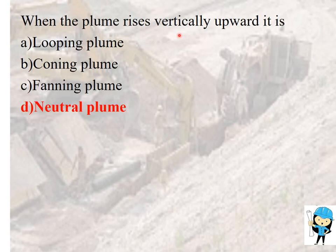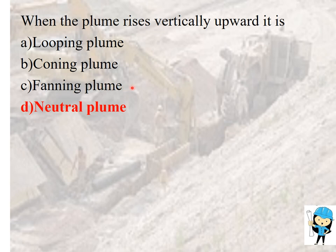When a plume rises vertically upward it is called a neutral plume. The neutral plume occurs when wind velocity is less than 1.5 meters per second. If the same vertically upward rising plume has wind velocity greater than 1.5 meters per second, it is called a coning plume. Fanning plume occurs during inversion conditions, while neutral and coning plumes occur during sub-adiabatic conditions.